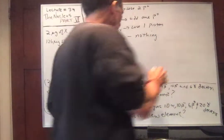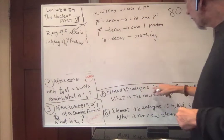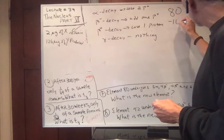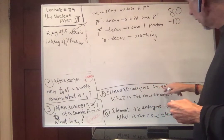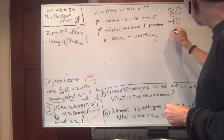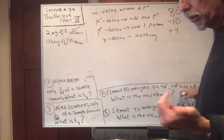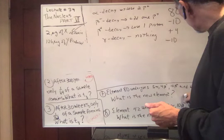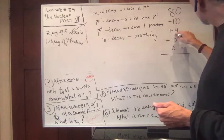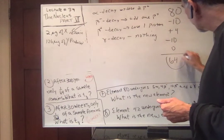Element 80 undergoes 5 alpha, 4 beta minus, 10 beta plus, and 6 gamma decays. 5 alpha decays: lose 10 protons. 4 beta minus: add 4 protons. 10 beta plus: subtract 10 protons. Gamma: nothing. So 80 minus 10 plus 4 minus 10 gives us element 64.